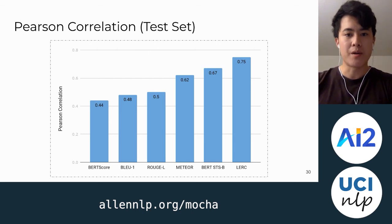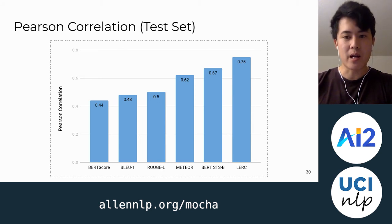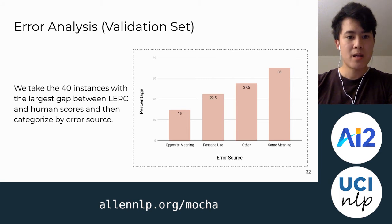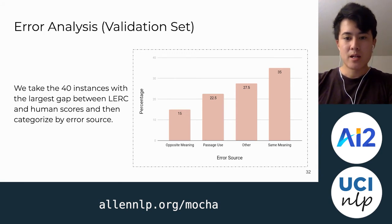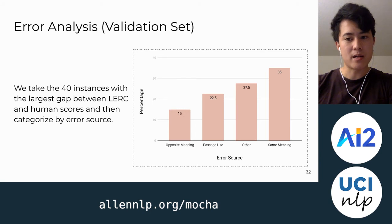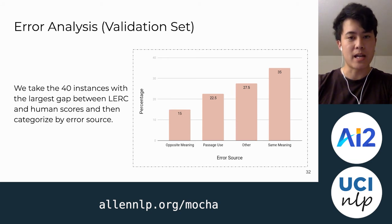Our first set of results is Pearson correlation on the test set. Meteor does the best out of the n-gram-based metrics, paraphrase detection does slightly better, and LURC does the best while still leaving significant room for improvement. To understand what LURC could be improved on, we take 40 instances from the validation set with the largest gap between LURC scores and human scores and categorize these by their error source. Errors come from LURC not recognizing when the reference and candidate have opposite or same meaning, not using the passage enough to resolve co-reference, and a large catch-all category for insufficient understanding of semantics or syntax.